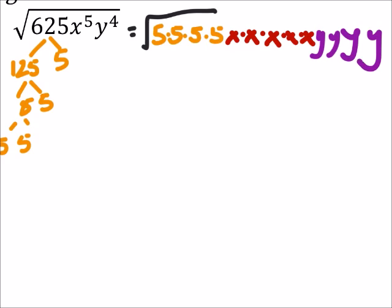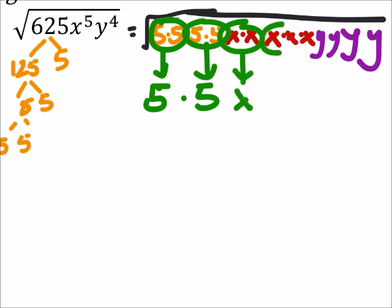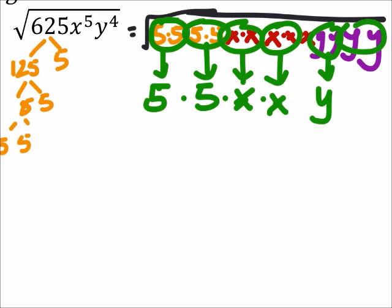And this is all under the square root. So again, we're looking for pairs. So this brings out a 5 of that square root, this brings out another 5. And since this is all being multiplied together, we're just going to multiply those. I've got a pair of x's and another pair of x's. Again, this is being multiplied. And I've got a pair of y's and another pair of y's that are being multiplied.